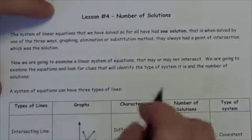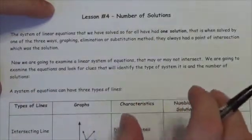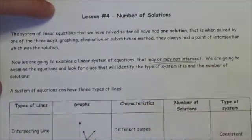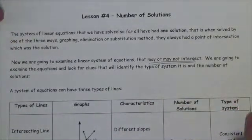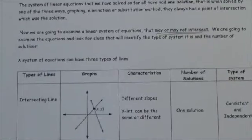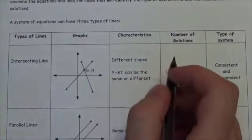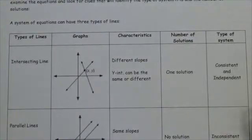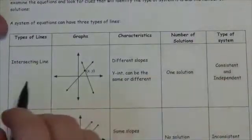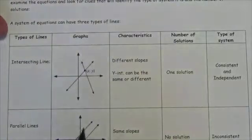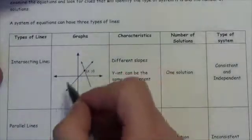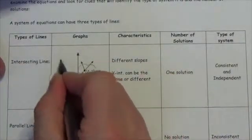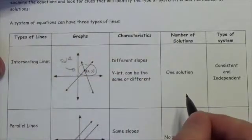Systems of linear equations may or may not intersect. We're going to take a look at the different ways they can intersect and some of the vocabulary that goes with it. There are three different basic types of ways that these can intersect. First of all, you can have intersecting lines, which is what we've seen throughout every other question that we've done thus far — two different lines that intersect at a point, and that intersection is the solution.